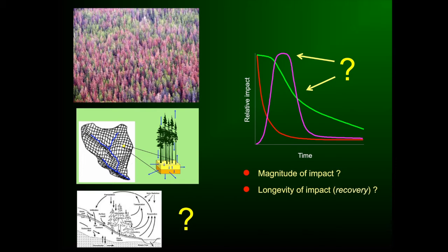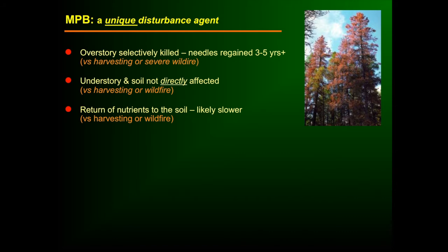There are potentially lots of different recovery trajectories depending on what happens. These are unknown questions about how mountain pine beetle is likely to influence hydrologic behavior. What British Columbia had to do was use their knowledge of how harvest and other disturbances affect these features, but there are important differences between harvesting and what's likely to happen after mountain pine beetle.